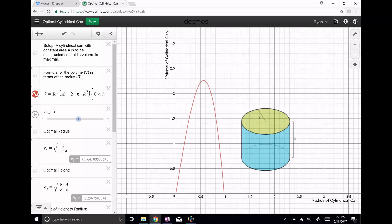So if I have a specified area, let's say I have six as my specified area, the question is what is the best radius, or what is the best height? And so if I go here it looks like the best radius, because this is the radius along here, radius of the cylindrical can, it looks like the best radius is around 0.564.